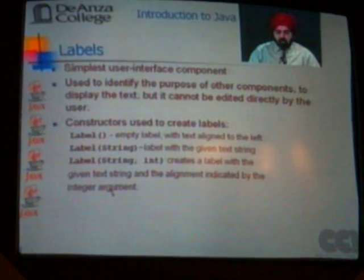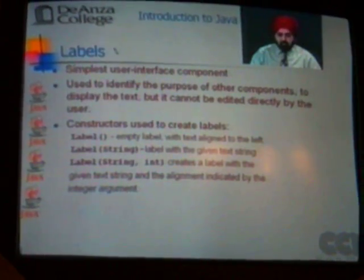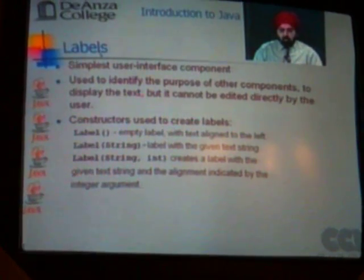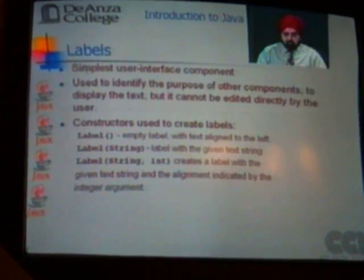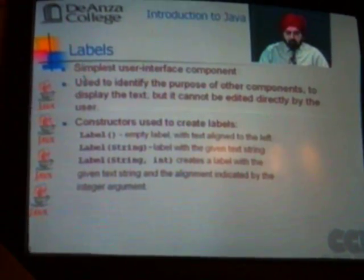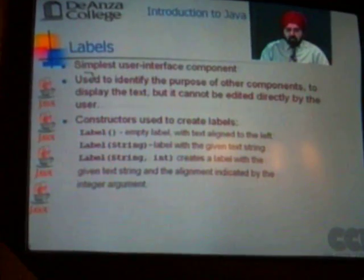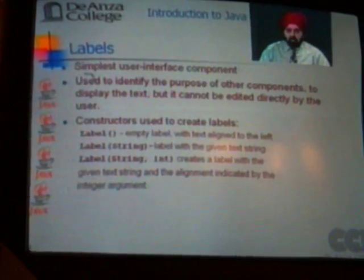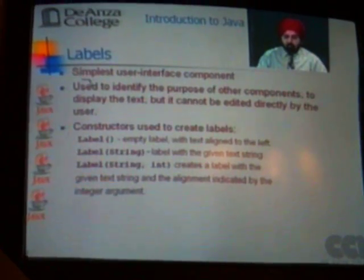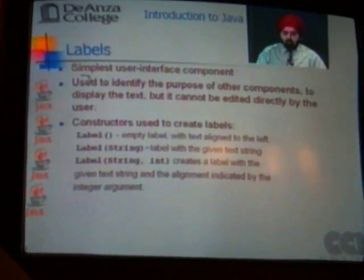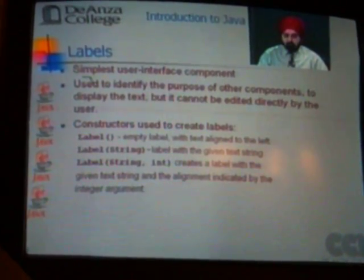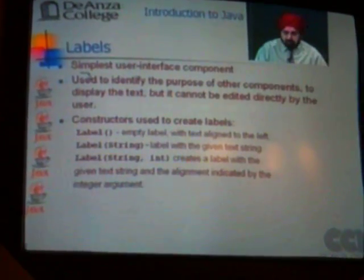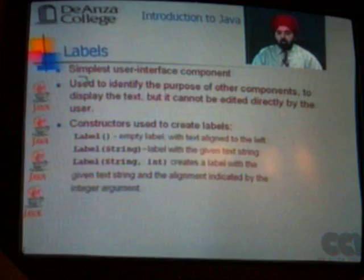We will look at some of these components. The first one to look at is labels. This is the simplest user interface component. It is traditionally used to identify the purpose of other components, for example to display a little bit of text and explain what a particular component does.